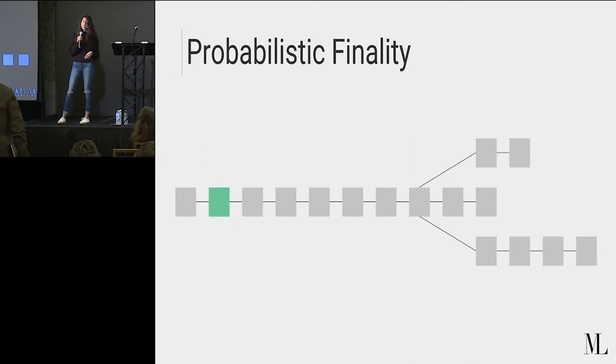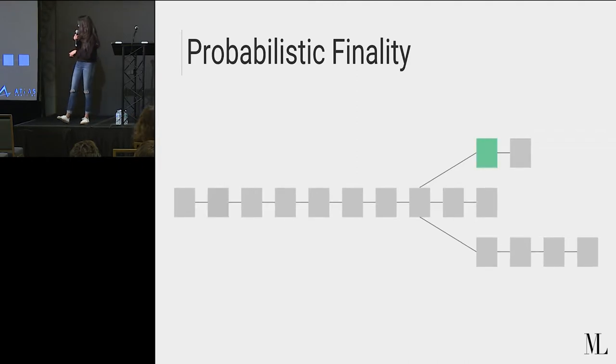So in this case, what we can see is that this green block is relatively deep in this main chain. So we're pretty sure that that block won't be revoked and that my transaction is finalized up to some probability of confidence. However, in this case, when the highlighted block is in one of these small forks, then we're worried. We don't know which of these three forks is going to become part of the canonical chain. So we don't want to act on that transaction. So this is why we call it probabilistic finality because depending on where the block is in the process, we have different degrees of certainty about whether or not that transaction will be finalized up to some degree.